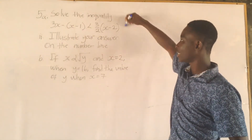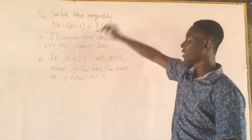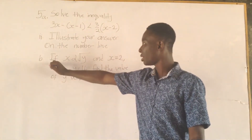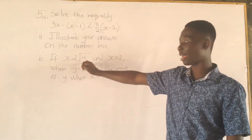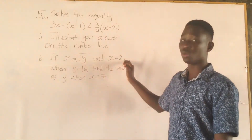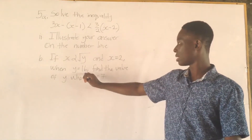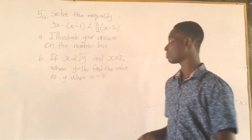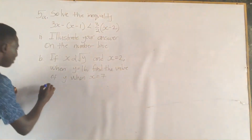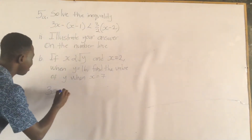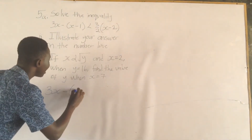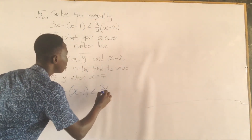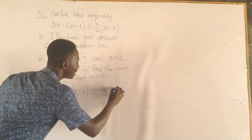Solve the inequality: 3x minus (x minus 1) less than 3 over 2 times (x minus 2). Illustrate your answer on the number line.